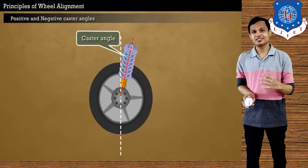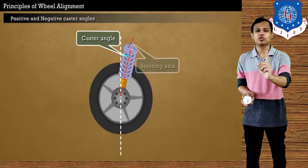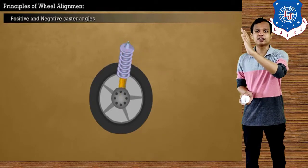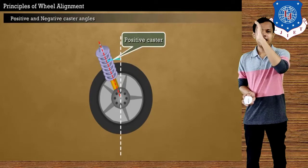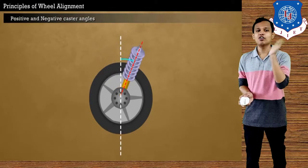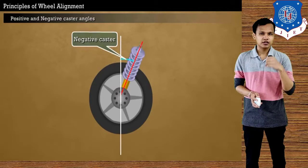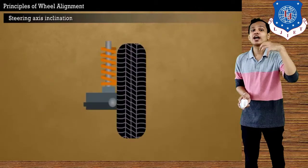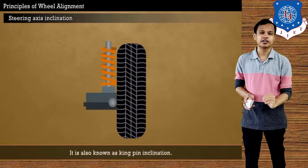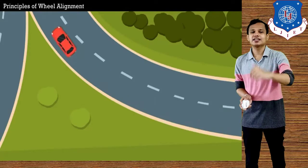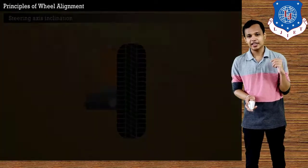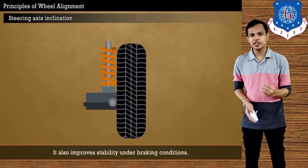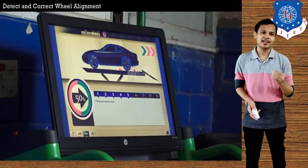The caster angle is the steering axis angle when viewed from the side. If the steering axis is inclined inward from the vertical axis, it is positive caster; if it is on the outward side, it is negative caster. The caster angle provides stability as well as cornering stability during turning. Steering axis inclination is helpful when braking the vehicle — at that time, steering stability is required, and that is provided by the steering axis inclination.